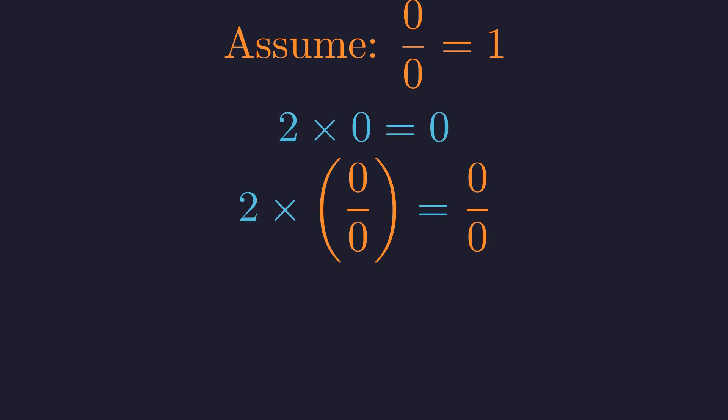Now we can use our initial assumption that zero divided by zero equals one. Watch what happens when we substitute. Substituting one into both sides of the equation yields two times one equals one, which simplifies to two equals one. This is the collapse. By allowing division by zero to have any value, we've destroyed the consistency of our entire number system. We can now prove that any number equals any other number. Mathematics becomes meaningless. This is why division by zero must remain undefined.